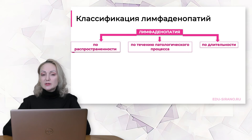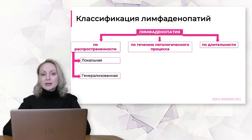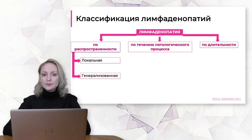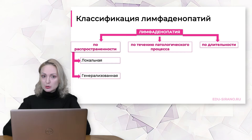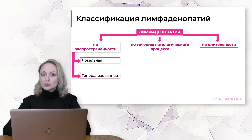На данном слайде представлена современная классификация лимфаденопатий. Лимфаденопатии разделяются по распространённости, по течению патологического процесса и по длительности. По распространённости выделяются локальная и генерализованная лимфаденопатии. Локальной считается лимфаденопатия, когда мы видим увеличение периферических лимфатических узлов в одной анатомической группе либо в двух смежных анатомических регионах.